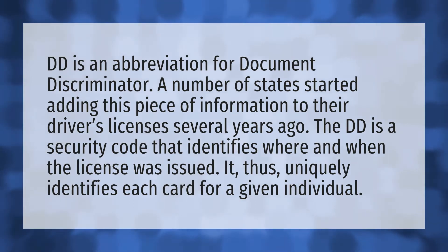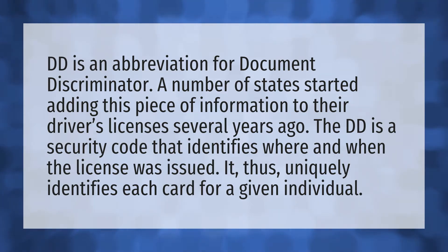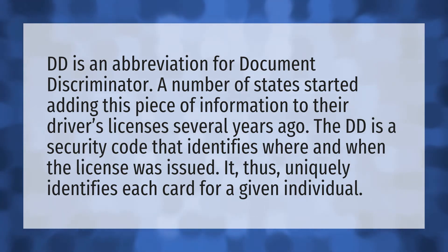DD is an abbreviation for document discriminator. A number of states started adding this piece of information to their driver's licenses several years ago. The DD is a security code that identifies where and when the license was issued. It thus uniquely identifies each card for a given individual.